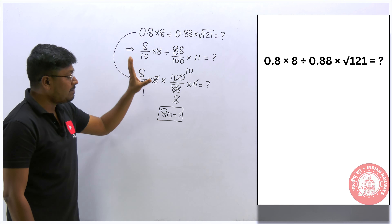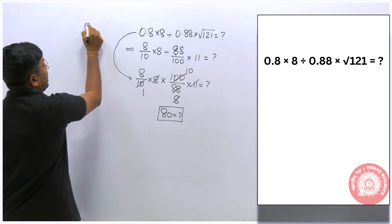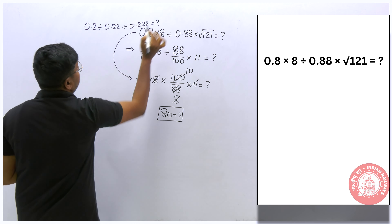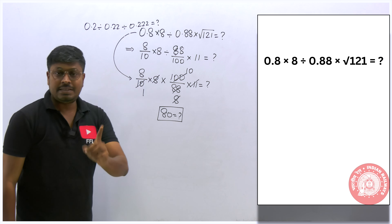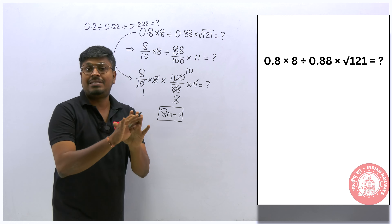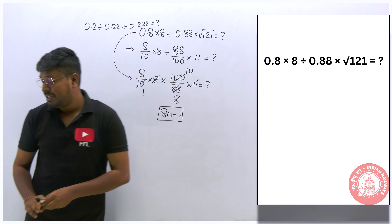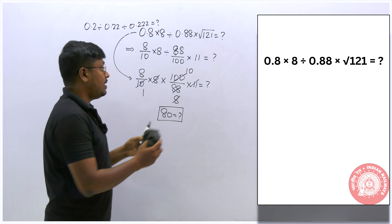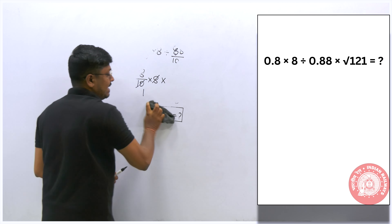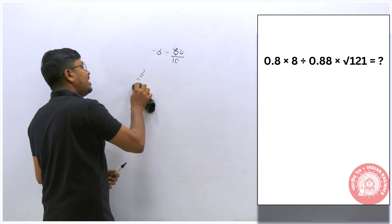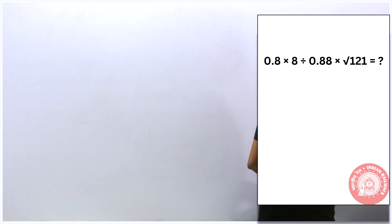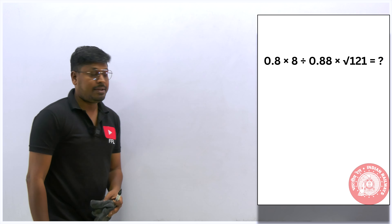Always remember: if you are solving a simplification question based on decimal values, first remove the decimal and then solve. There is a higher chance of making a mistake if you don't, especially when solving within 30 seconds in the exam. So do not try to directly cancel values when they are in decimal form.